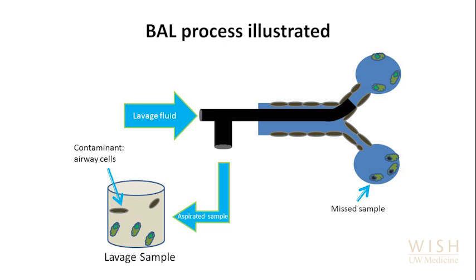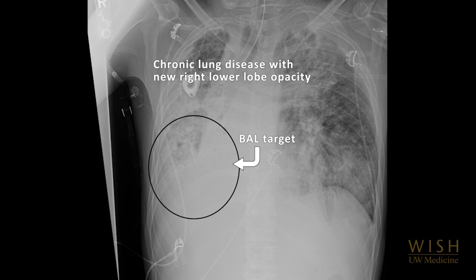The concept of BAL is straightforward. It relies on administering aliquots of sterile, non-bacteriostatic saline toward a targeted area of lung, allowing the instilled saline to mix with the alveolar content. The sample fluid is then collected by suction aspiration through the bronchoscope and sent for analysis. For infections, BAL should be targeted at the area of most disease radiographically.